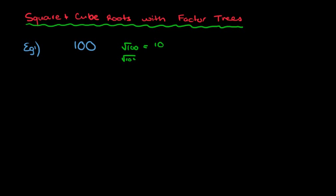Hopefully you'll also know that the square root sign and the square sign cancel each other out. So the whole aim of this activity is to somehow have 10 squared, or 10 times 10 — those are the two things I'm looking for. Because automatically once I have those two things, I can either get rid of the squared number or I can get rid of one of those 'times 10's, and I'm left with my answer.